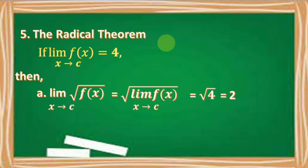Number 5: The Radical Theorem. If the limit of f of x as x approaches c equals 4, then the limit of the square root of f of x as x approaches c is equal to the square root of the limit of f of x.